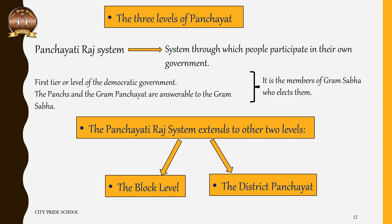Now we will see the three levels of Panchayat. The Panchayati Raj system is a process through which people participate in their own government. In rural areas, the Gram Panchayat is the first tier of democratic government at the village level. The Gram Panchayat is answerable to the Gram Sabha because it is the members of the Gram Sabha who have elected them. This idea of people's participation extends to the next two levels of the Panchayati Raj system.